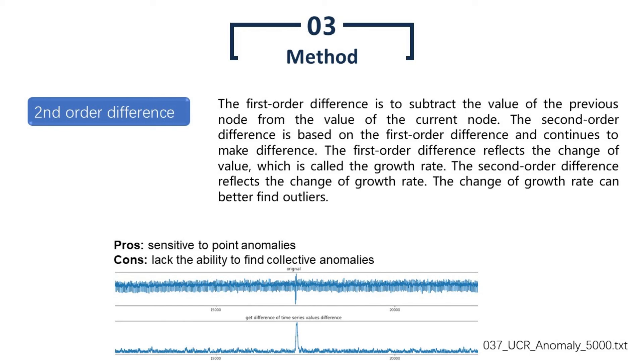Simple methods also work well for certain tasks. The second order difference method is the one we used in the default setting. The first order difference is to subtract the value of the previous node from the value of the current node. The second order difference is based on the first order difference and continues to make difference. The first order difference reflects the change of value, which is called the growth rate. The second order difference reflects the change in the growth rate. The change of growth rate can better find outliers. The advantage of this method is that it is sensitive to point anomalies and very fast due to its localized property, while the drawback is it lacks the ability to find collective anomalies.